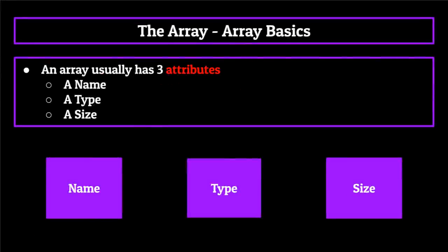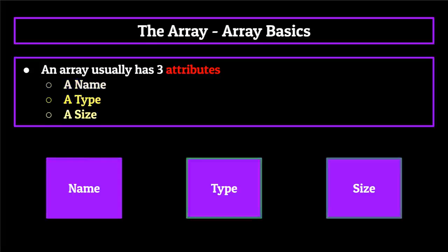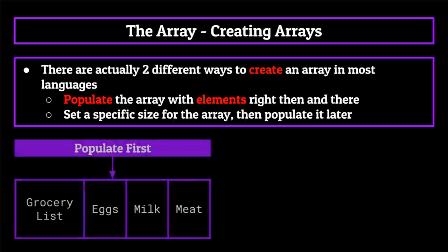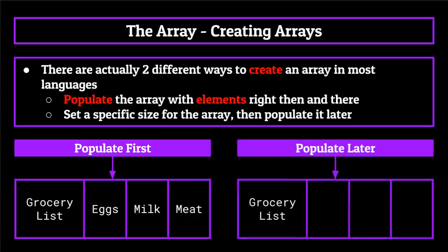So there you have it — the three attributes of an array: a name to reference it, a type to fill it with, and a size to control it. Let's now shift focus and talk about how we actually define an array ourselves, how we reference and change values within an array, and then dive into the idea of two-dimensional arrays. There are actually two different ways to instantiate an array in most languages. You can either populate the array with elements that you want contained within it right then and there, or you can set a specific size for the array and then slowly populate it later on as the program runs.